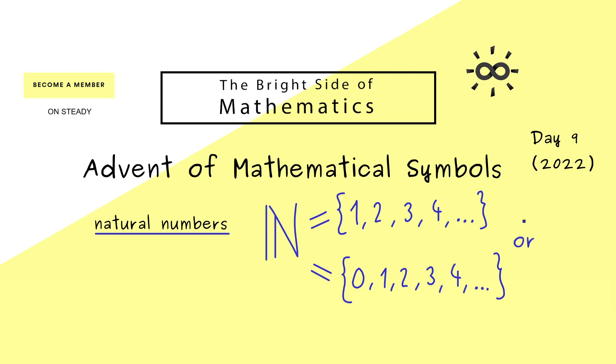Therefore, if you start reading a mathematical book, you should always check which of both definitions is used. For example, if the first notation for natural numbers is used, then the second set is also important and usually gets a new name, like ℕ with index zero.